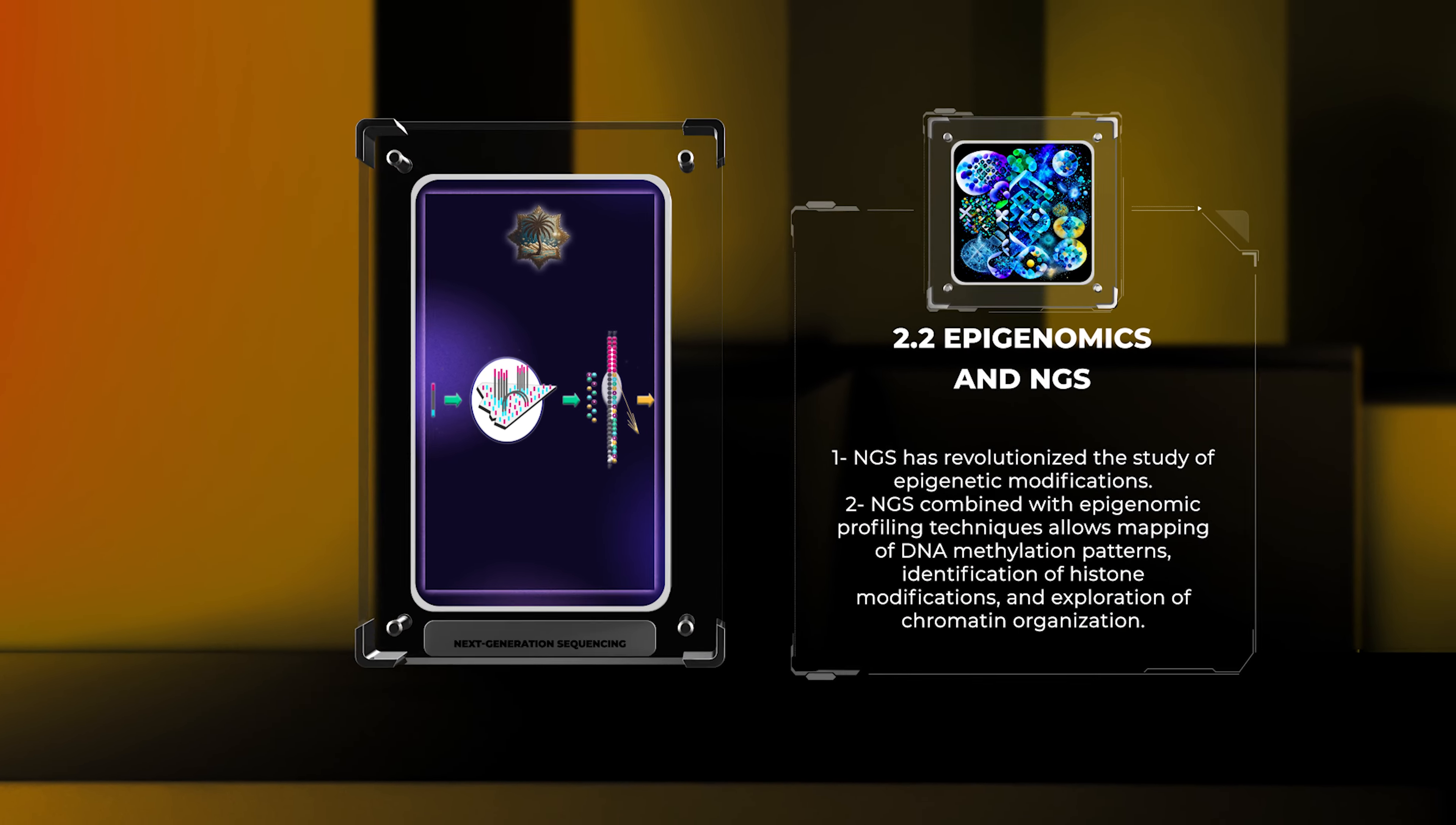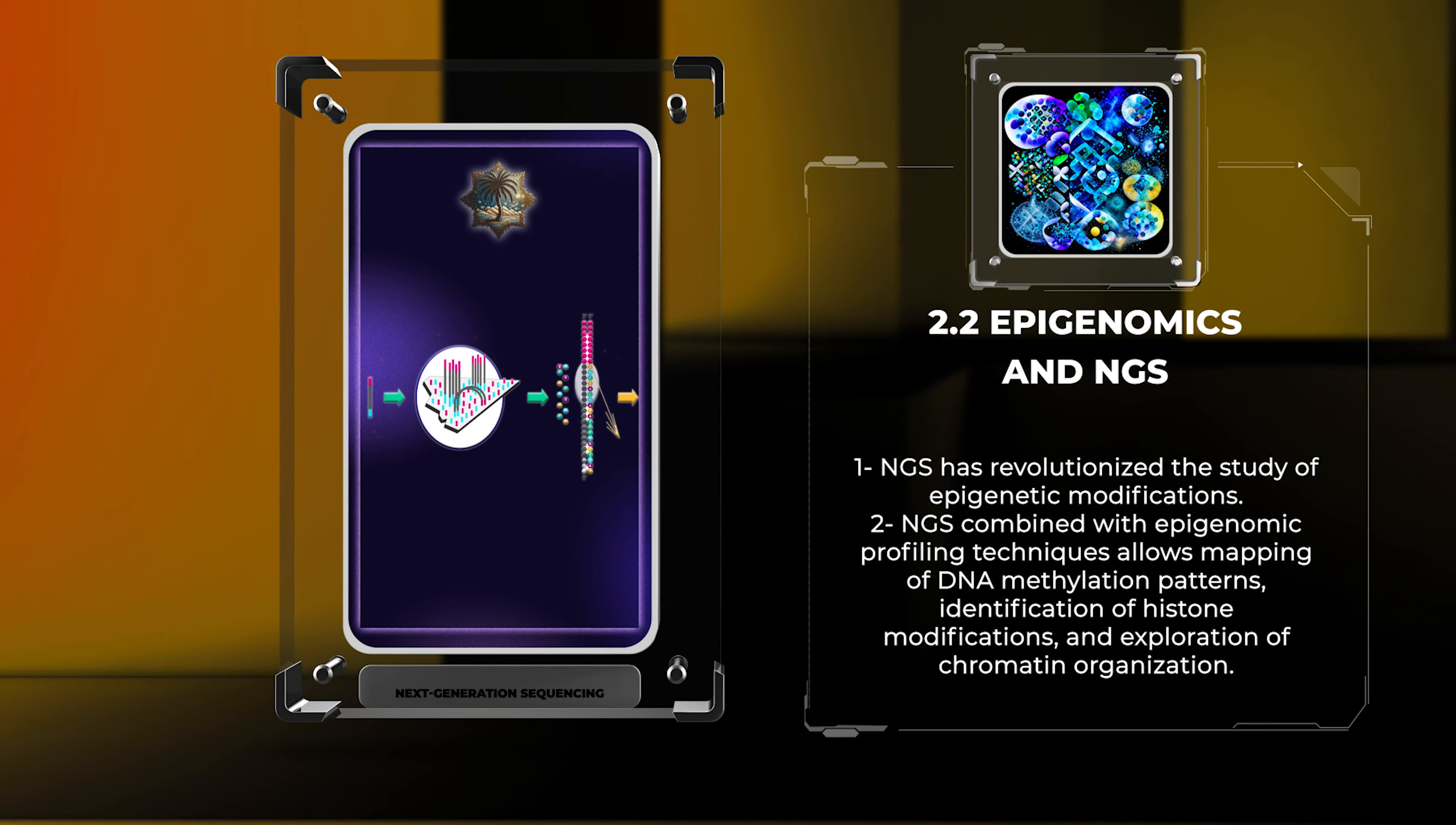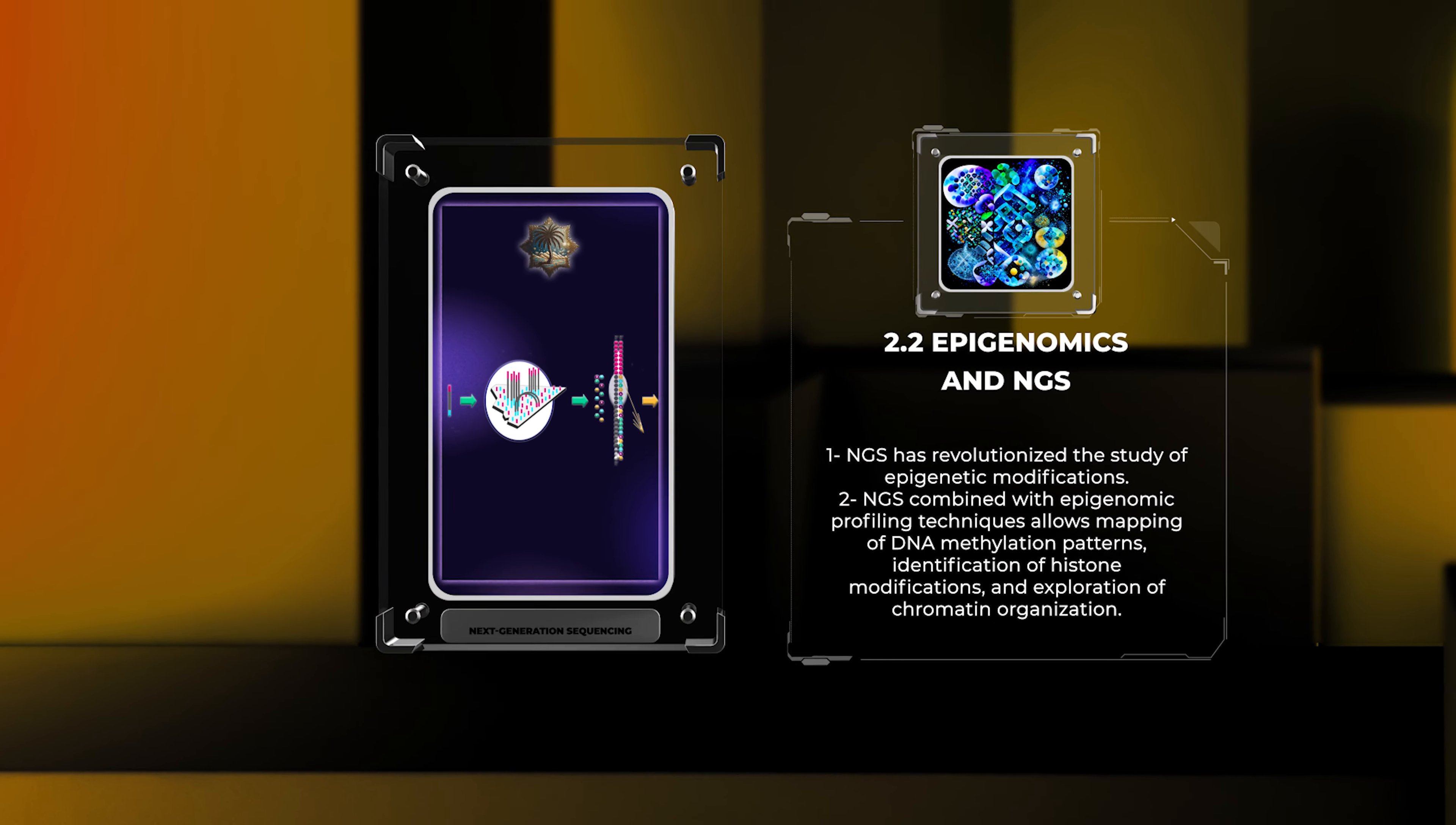By combining NGS with epigenomic profiling techniques, researchers can now map DNA methylation patterns across the genome, identify histone modifications associated with gene regulation, and explore the three-dimensional organization of chromatin.